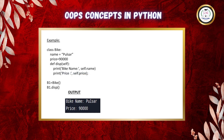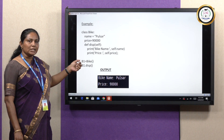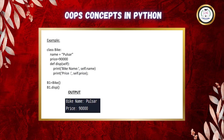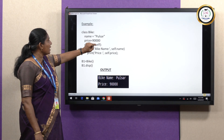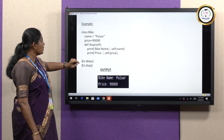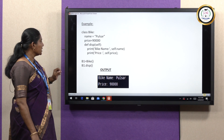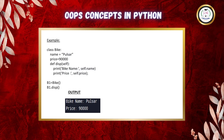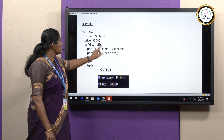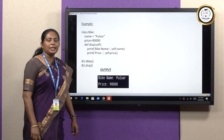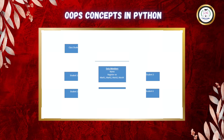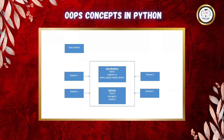Here is one example program for how to use class and objects in Python. 'class' is a keyword, bike is the class name. Name and price are data members. Initially, name holds the value 'pulsar' and price holds the value 90,000. It contains one method called disp. Self is a mandatory parameter. The print statement prints the value on screen: bike name is equal to pulsar, price is equal to 90,000. This diagram shows the relationship between class and object.